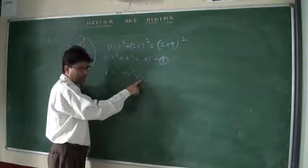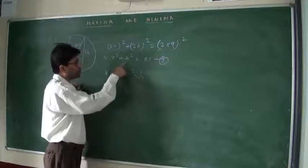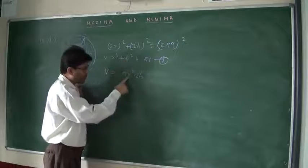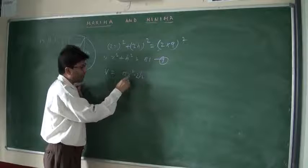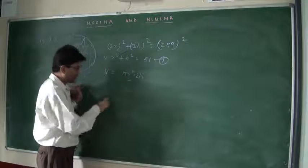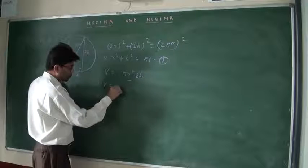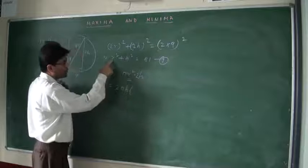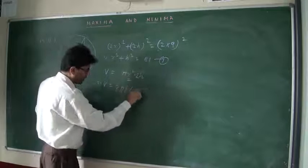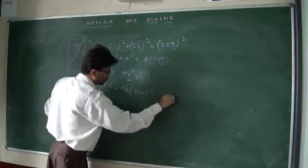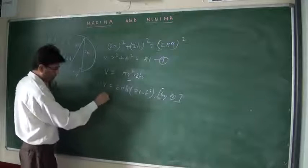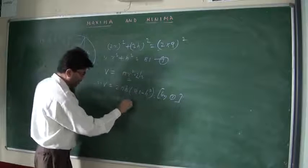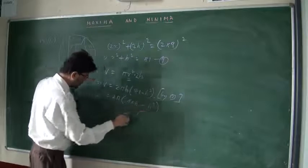If you replace h, a square root will come because h appears as h². But if we replace r², that will be simpler. So I will replace r² from equation 1, which gives V = 2πh × (81 − h²). Multiplying through: V = 2π(81h − h³). This is your volume function.